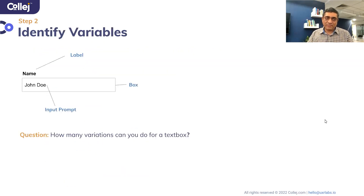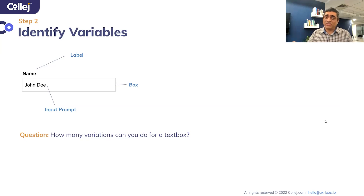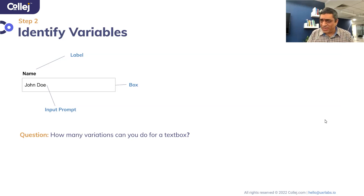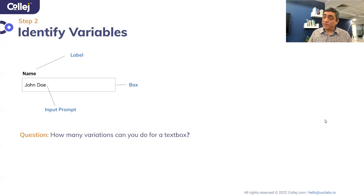Now let's look at all the variables. There are multiple variables, and I'm just going to look at three of them — you could also look at interaction variables like animation, but for the sake of understanding variabilization, we'll focus on three. You have a label on top, then you have the box, and then you have an input prompt inside that says, for example, 'type your name here.' Those are the three basic variables you'll probably have to play with. Let's look at how many different ways we can play with them.